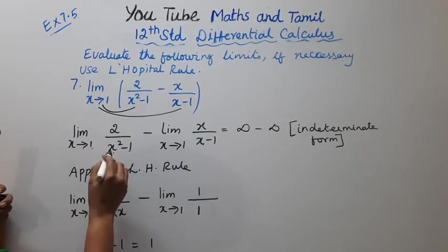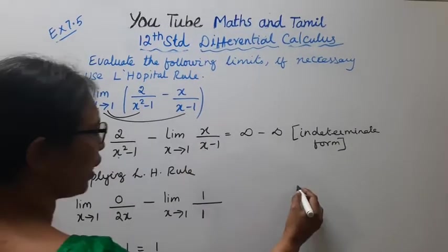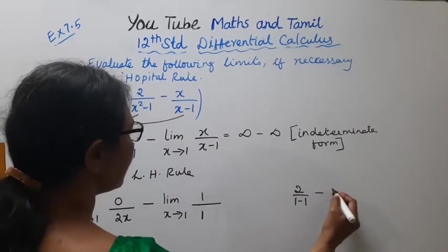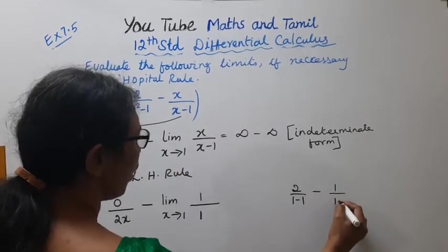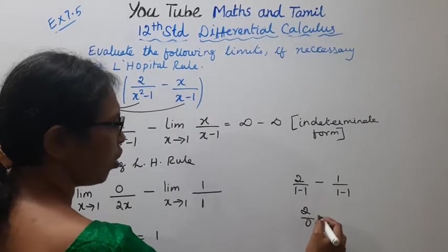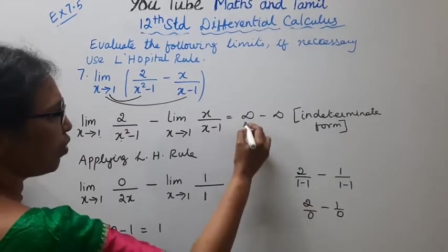Substituting x equals 1: 2 by 1 square minus 1, 2 by 1 minus 1, minus 1 by 1 minus 1. This gives 2 by 0 minus 1 by 0.